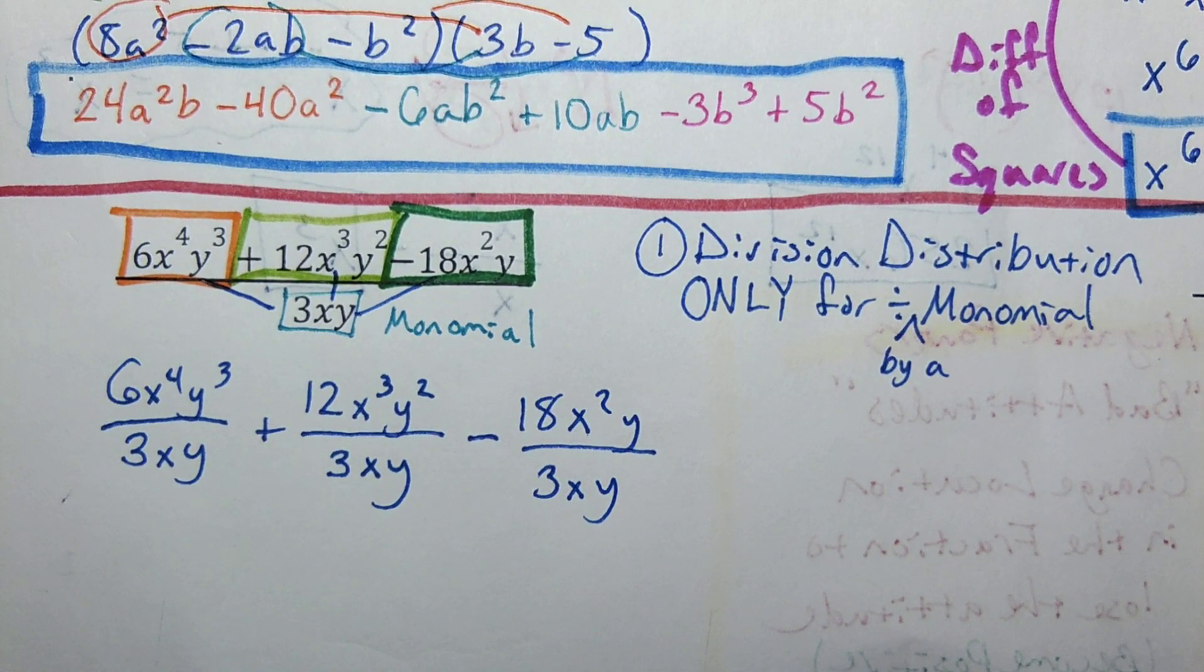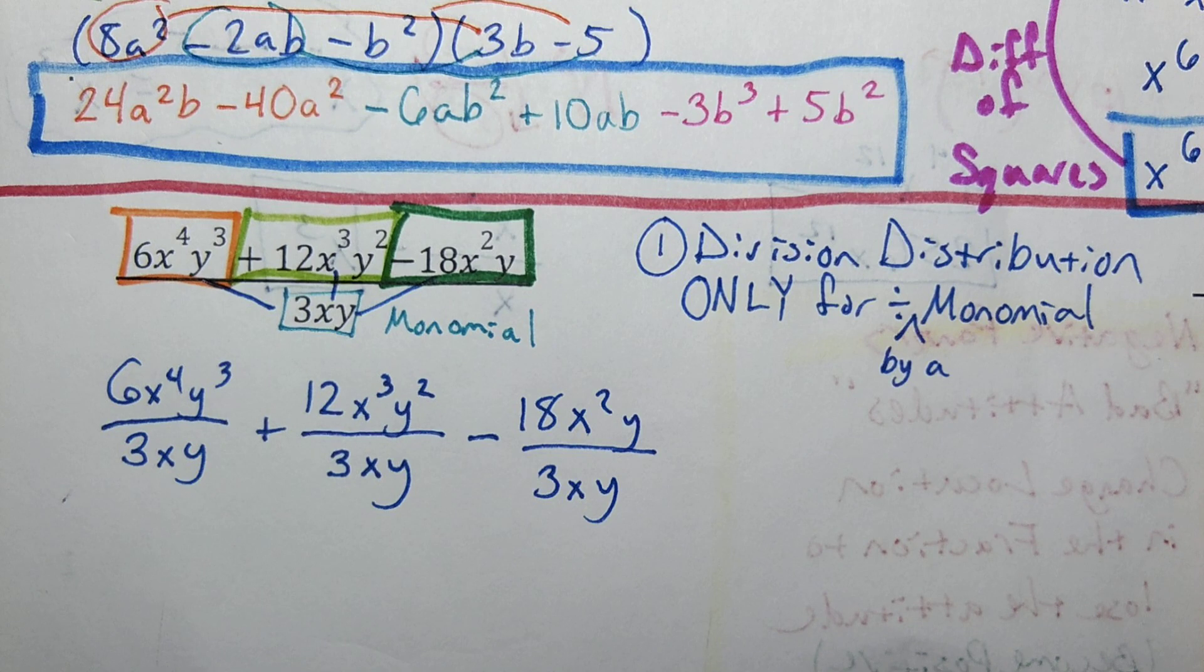So what I'm doing is I'm breaking this big monster fraction down into three individual fractions which I will be able to simplify separately.